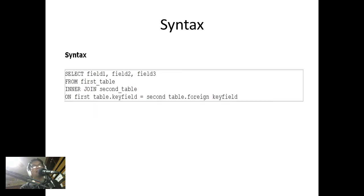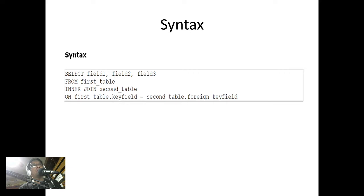Let's examine the syntax of an SQL join. We have SELECT, then fields: field1, field2, field3, and so on. We can have several fields or also expressions. Then FROM the first table, INNER JOIN the second table, then ON we have the first table key field equal to the second table foreign key field, or vice versa. The first table may contain the foreign key field and the second table will have the primary key.